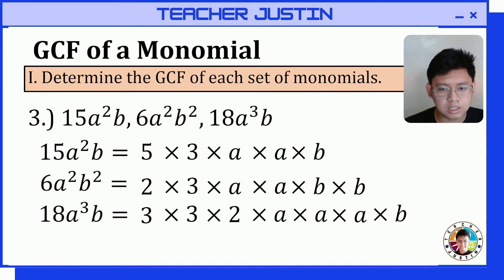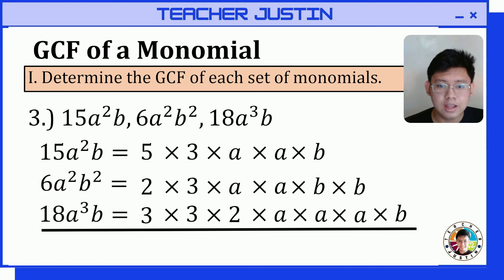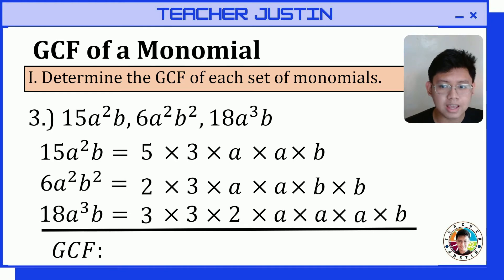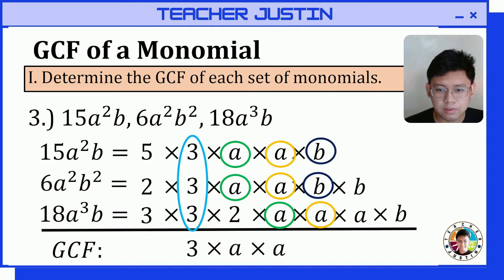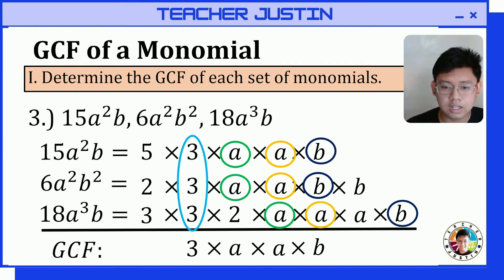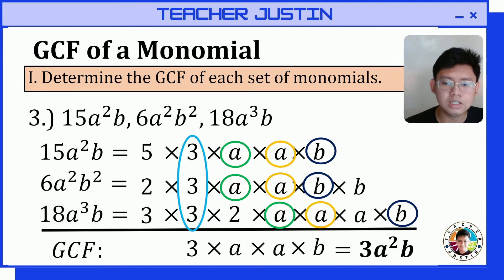After getting the prime factors of our monomials, let's identify the common factors. The common factors are 3, a, another a, and one b. To get the greatest common factor, we multiply all the common factors: 3 times a times a times b, which gives us a greatest common factor of 3a squared b.